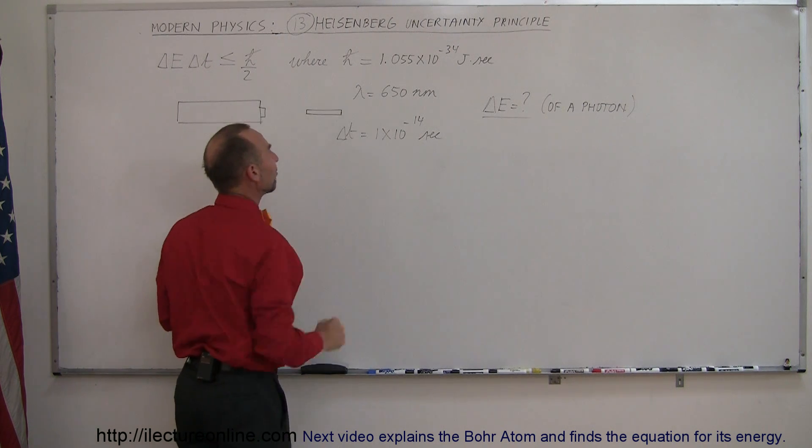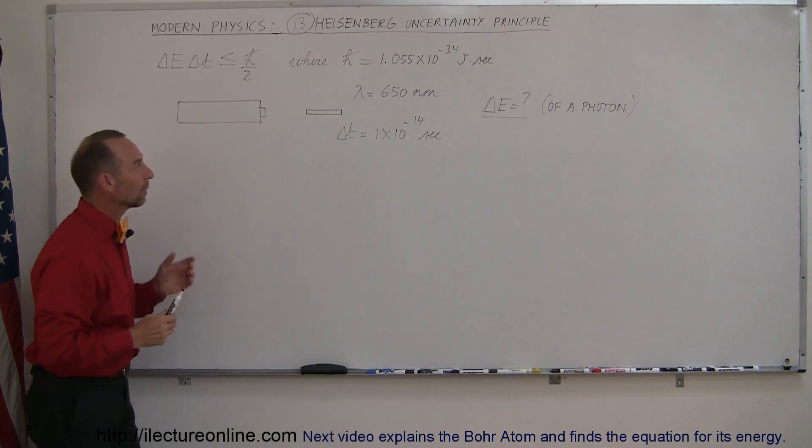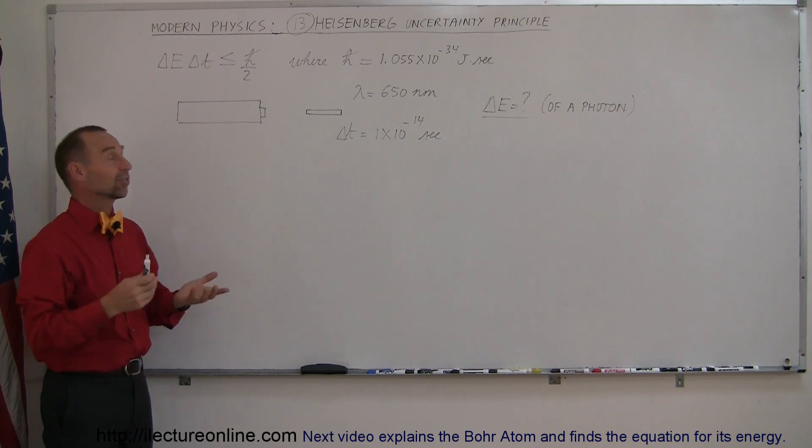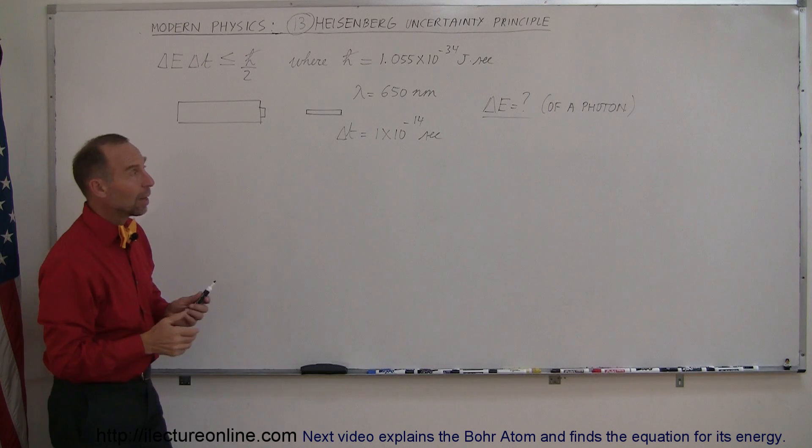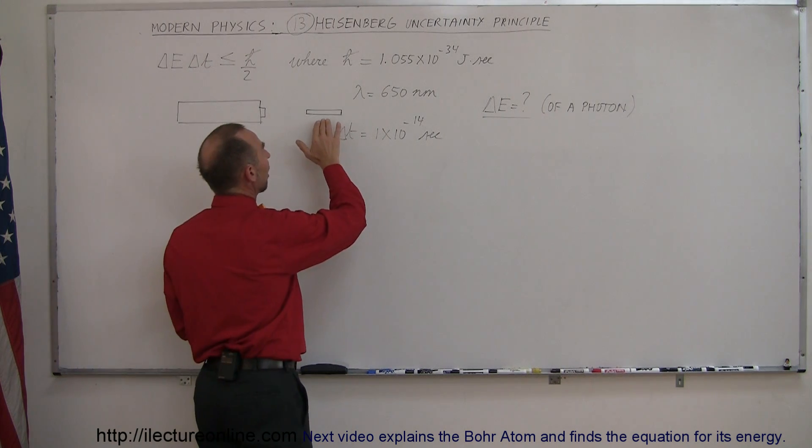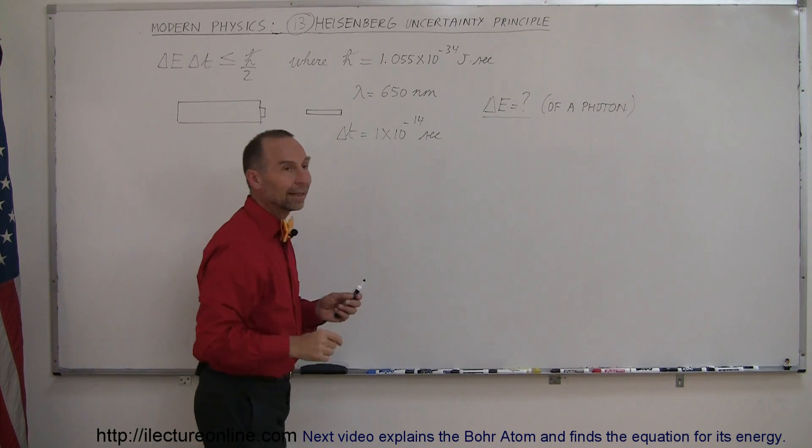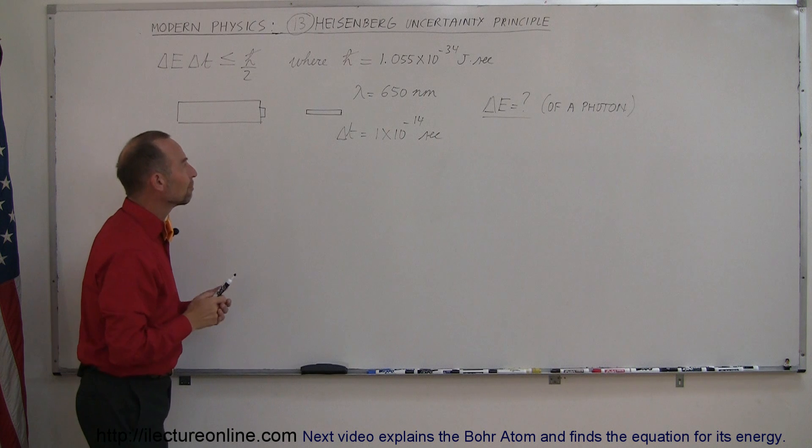Let's say that the wavelength of that light coming out of the laser is 650 nanometers, and we're now trying to find the energy of each of the photons within that small piece of a beam.